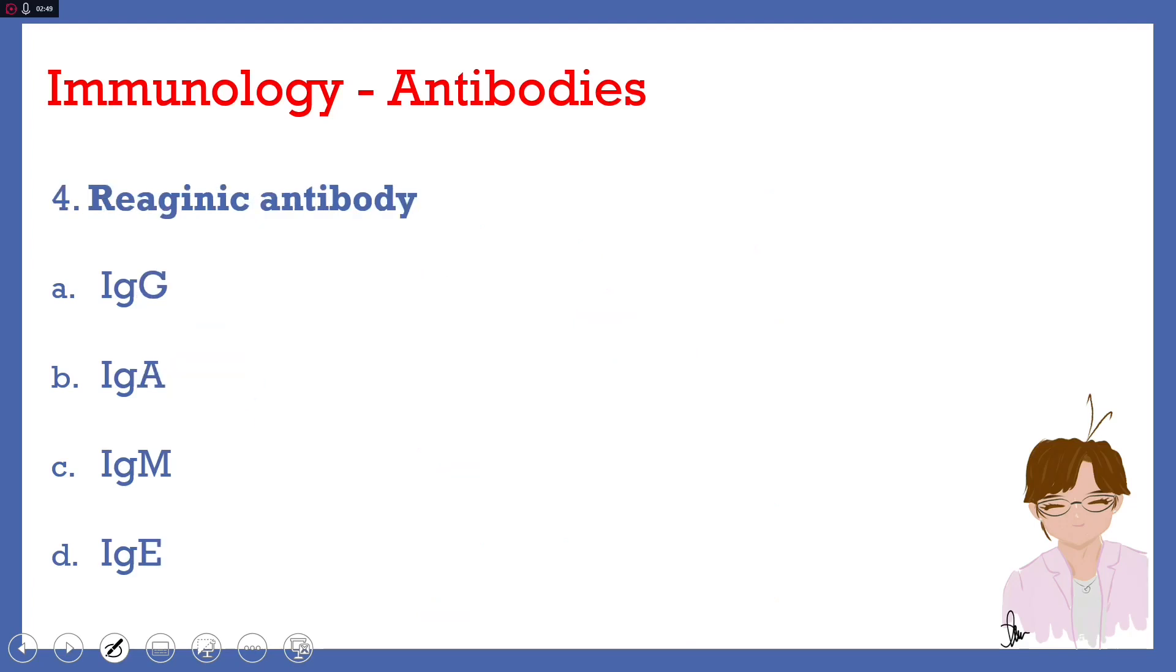Number 4. Formerly known as the reagenic antibody. Letter A, IgG. Letter B, IgA. Letter C, IgM. Or letter D, IgE. Answer here is letter D, IgE.